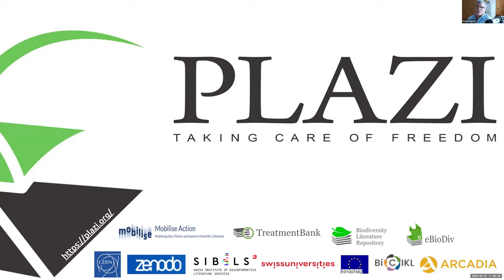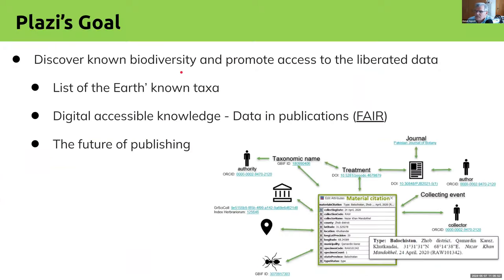Unfortunately, Julia can't join because of the massive flooding in southern Brazil — which is really sad. So, Plazi is a Swiss NGO based in Switzerland, mainly for copyright reasons. The goal is to discover known biodiversity — we want to know how many species have been described, and not just a list of species, but all the knowledge about them. We're very interested in digital accessible knowledge. This collaboration with TaxOnWorks is exciting because they might have a slightly different view of what digital accessible knowledge comprises.